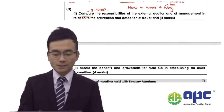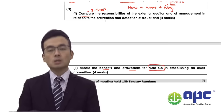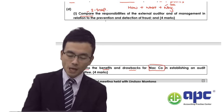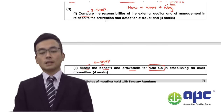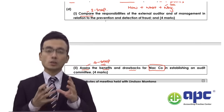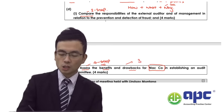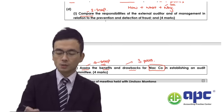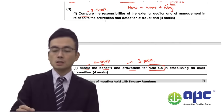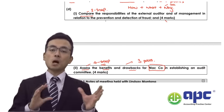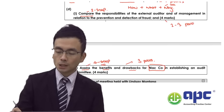Part D2 involves assessing the benefits and drawbacks of establishing an audit committee in MACL. The verb 'assess' means we use the four-step approach. For four marks, include three paragraphs maximum when assessing benefits and drawbacks. For comparison questions, deem 1.5 to two marks per point, so include two to three paragraphs in your answer.